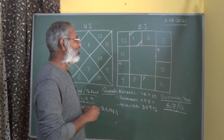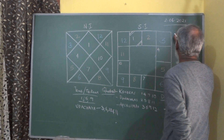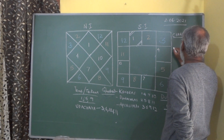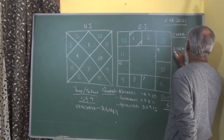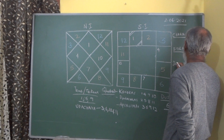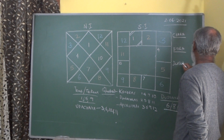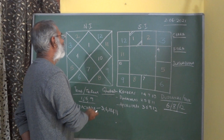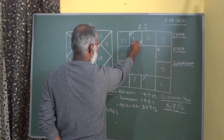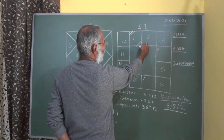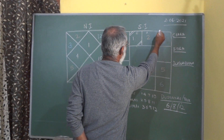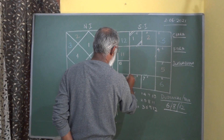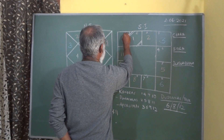This will take a little bit of time. We need to understand three levels here — there are three types of Rashis: Chara, Sthira, and Dvishvabhava, which is movable, fixed and dual. The same pattern repeats — Chara, Sthira, Dvishvabhava — four times across the 12 signs. We have spoken about this in our earlier first or second class.